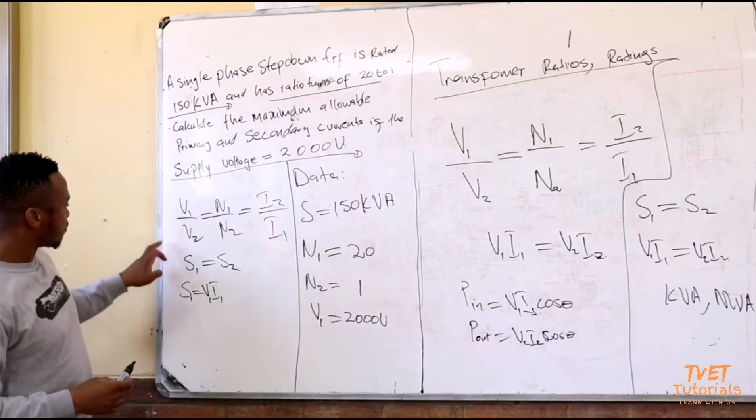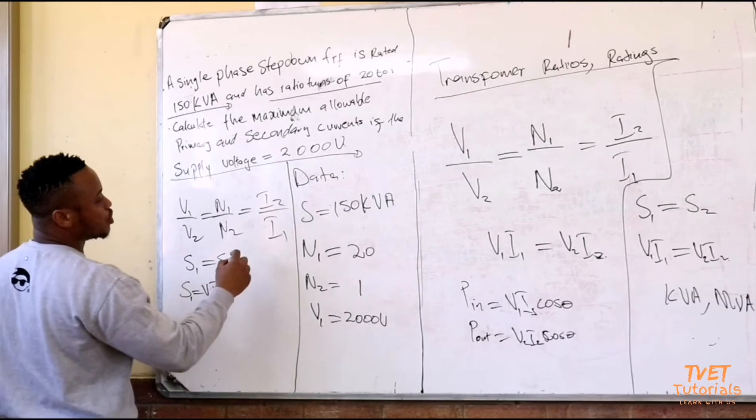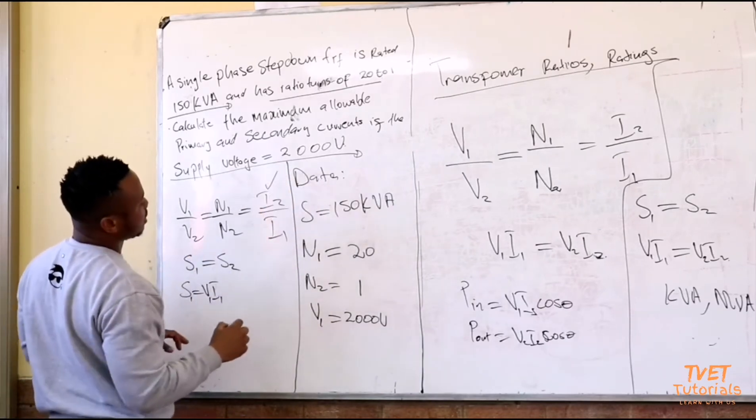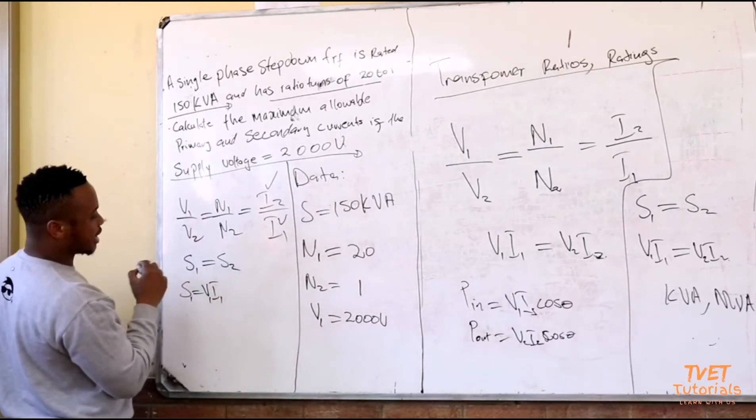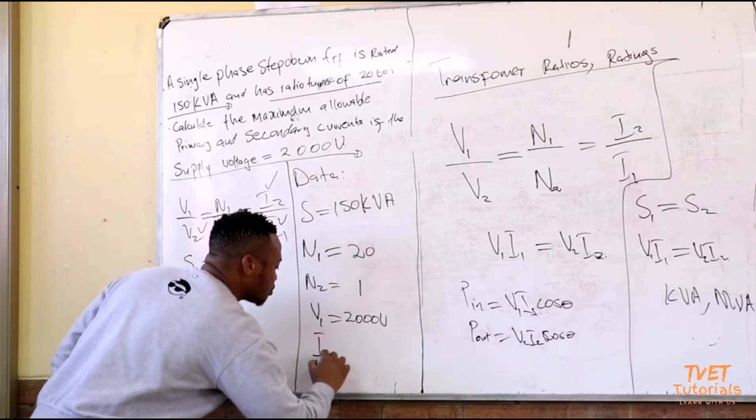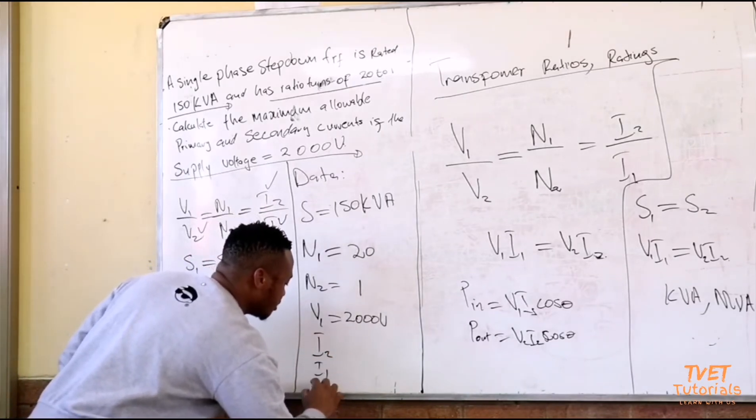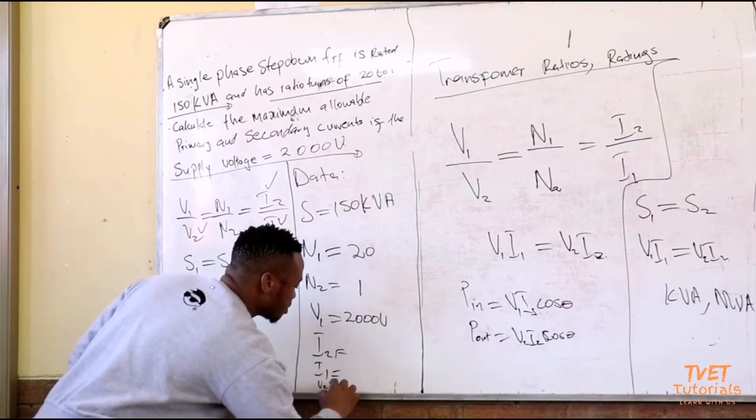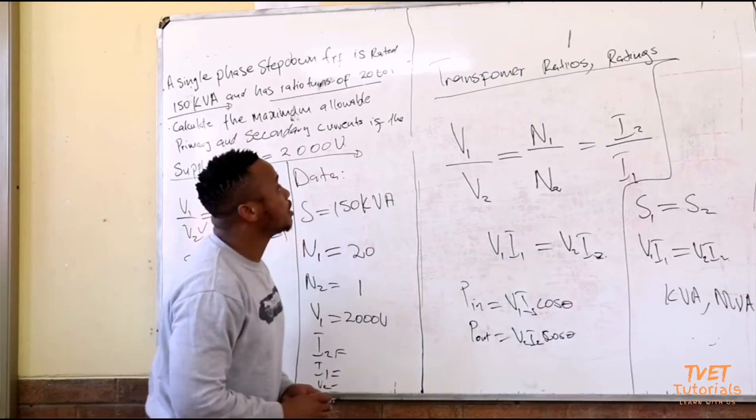What is it that I don't have from these equations? I do not have i2, I do not have i1 and I do not have v2. So these are my unknowns. This is what I need to then calculate.